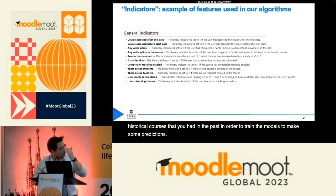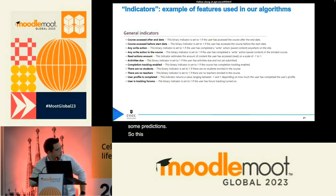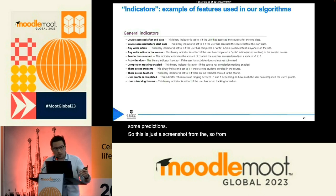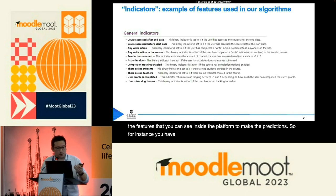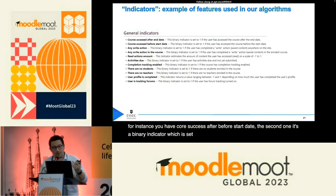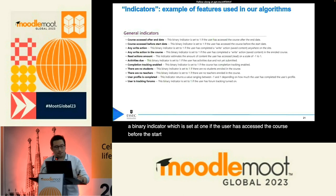This is a screenshot from the documentation explaining the features available inside the platform in order to make predictions. For instance, course accessed before start date is a binary indicator set to 1 if the user accessed the course before the start date, and 0 otherwise. You have all the descriptions inside the Moodle Analytics documentation.